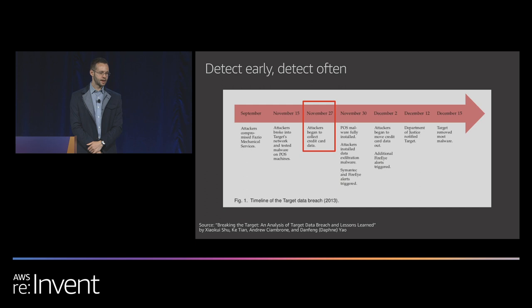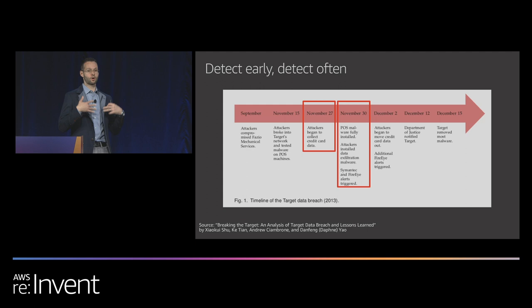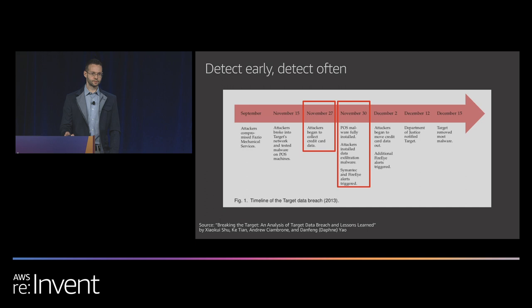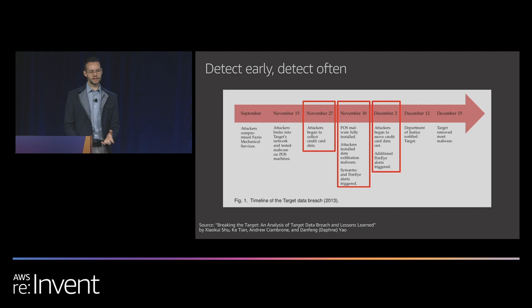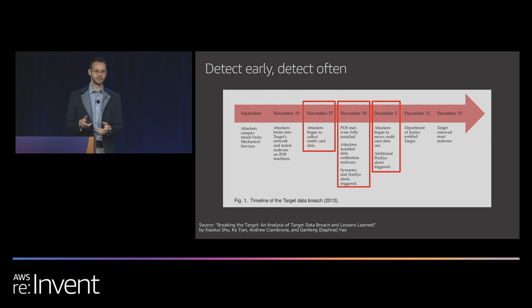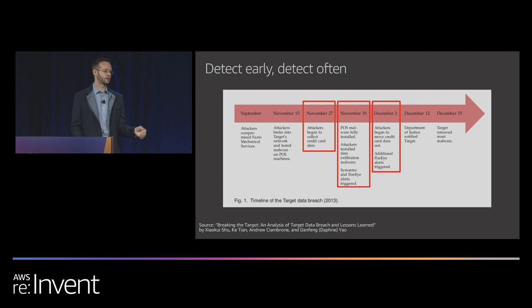Three days later, the point-of-sale system malware was completely installed, and the attackers moved to installing exfiltration malware — how they're actually going to get the credit cards out of the environment. At this point, Symantec and FireEye, two security companies that Target had bought, actually triggered alerts. This was the first opportunity that the Target security team had to do something, to prevent the breach or quarantine. Three days after that, on December 2nd, the attackers actually began to move the data out of the environment.